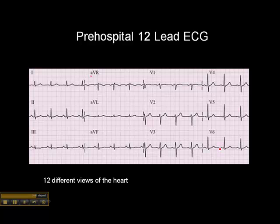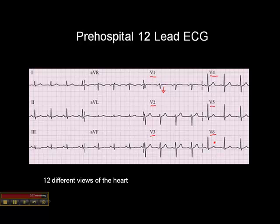V1 through V6 are the precordial leads, and these are also unipolar leads, but they're right on the chest and so they're close enough to the myocardium that they pick up the electrical signal fairly easily. V1 has an electrode above the ventricles, so the wave of depolarization is moving away — consequently we get a negative deflection — whereas V6's electrode is in the path of the wave of depolarization, so the QRS complex is upright.